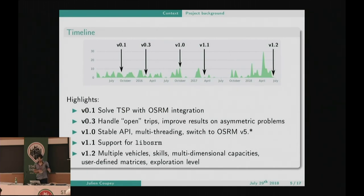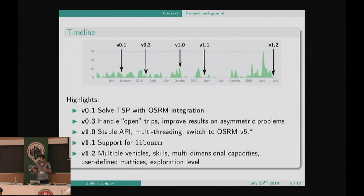We can define skills assigned to jobs, and those need to be served by matching vehicles or drivers. We can define multi-dimensional capacities, meaning you can impose restrictions on several metrics — maybe weight restrictions, volume restrictions, restrictions on number of items, and so on. You decide what metrics apply in your own context. There has also been work on the ability to define user matrices that you might want to compute from another source.